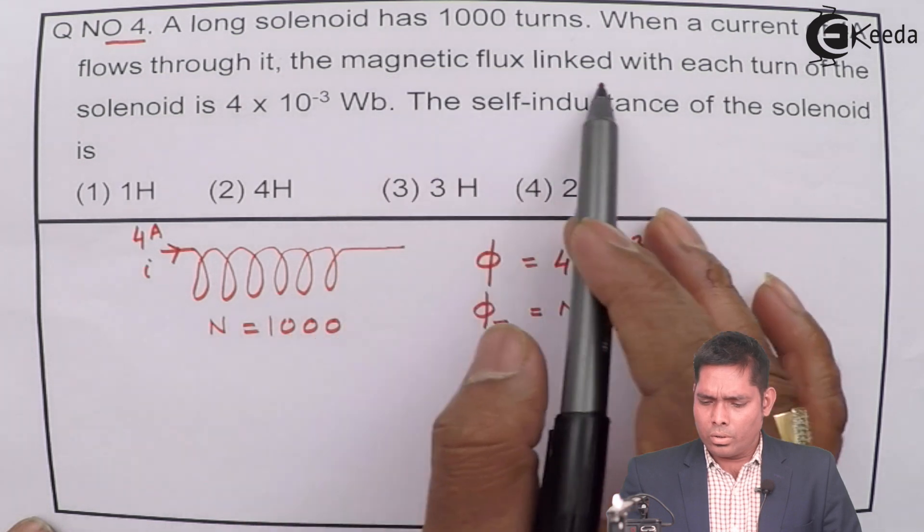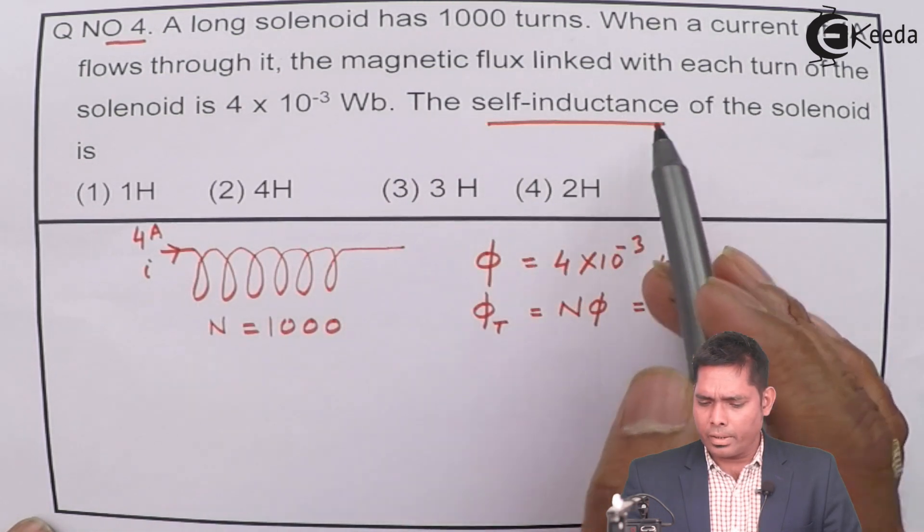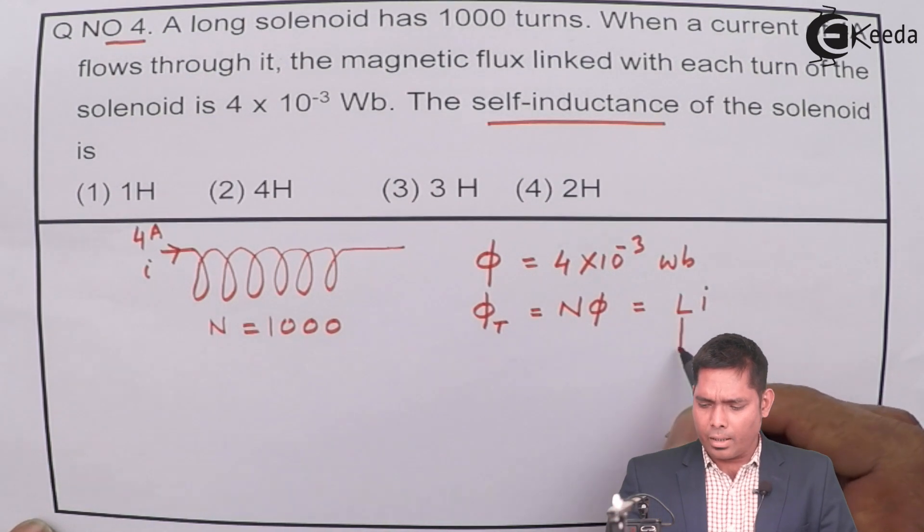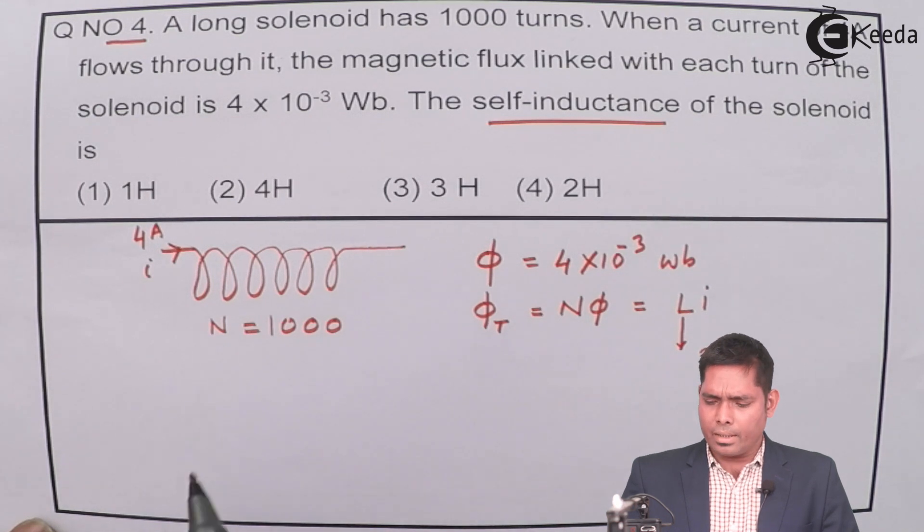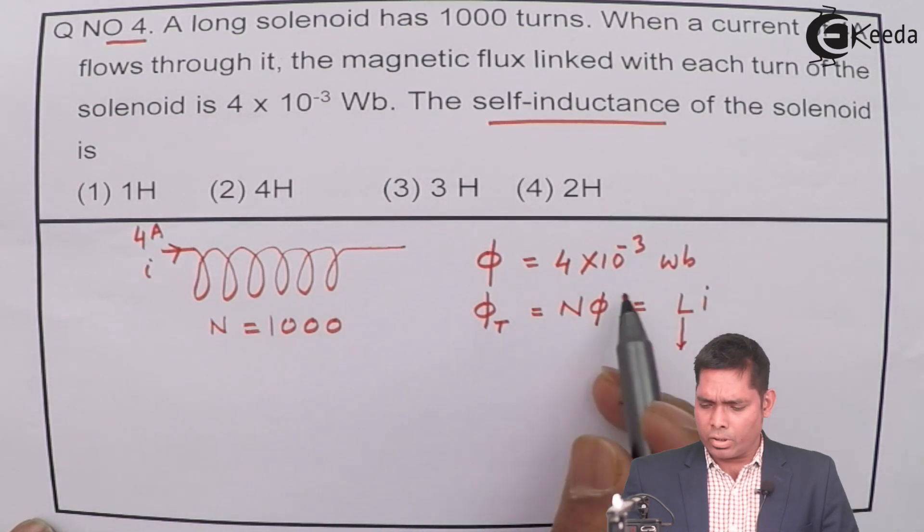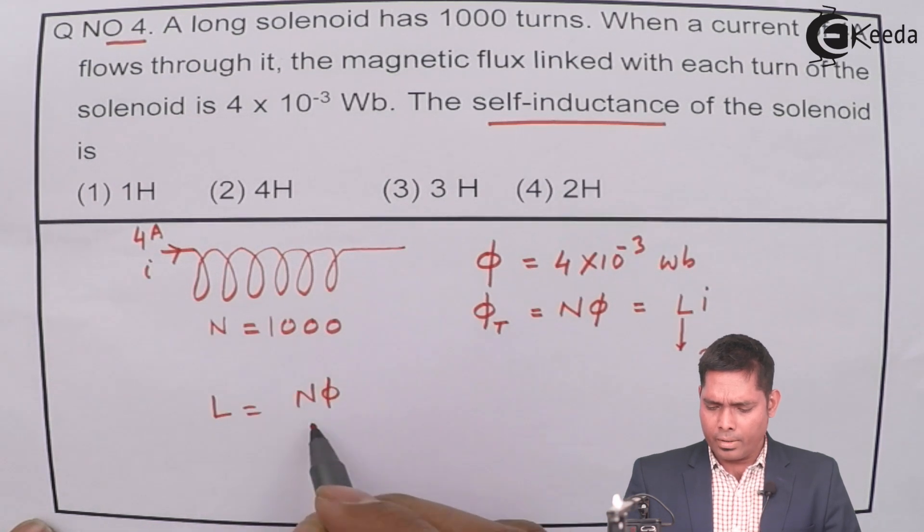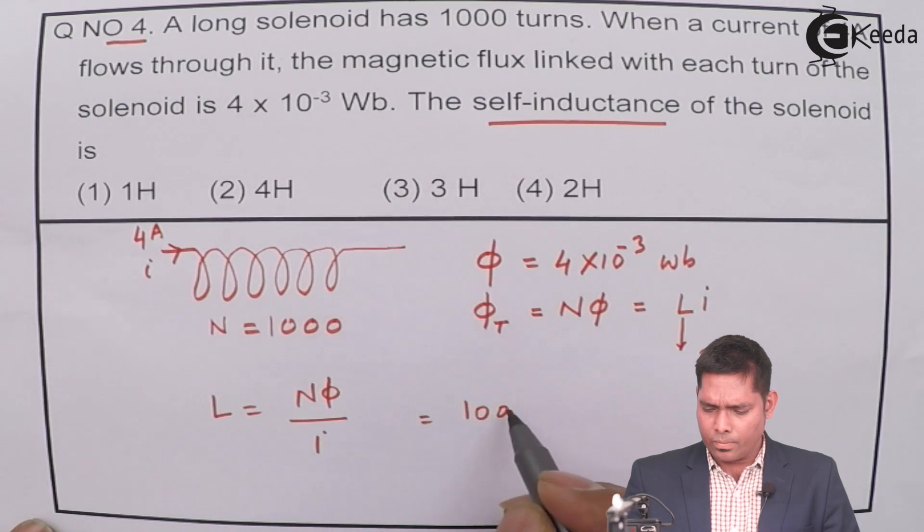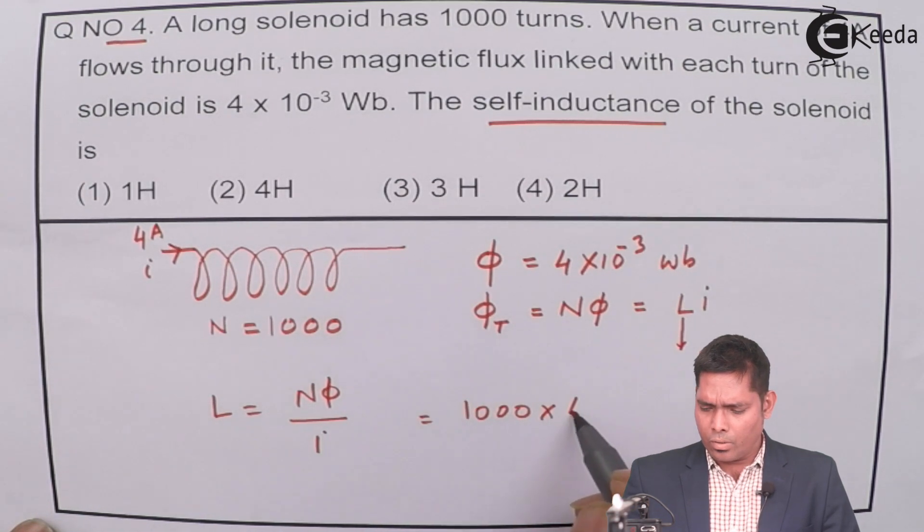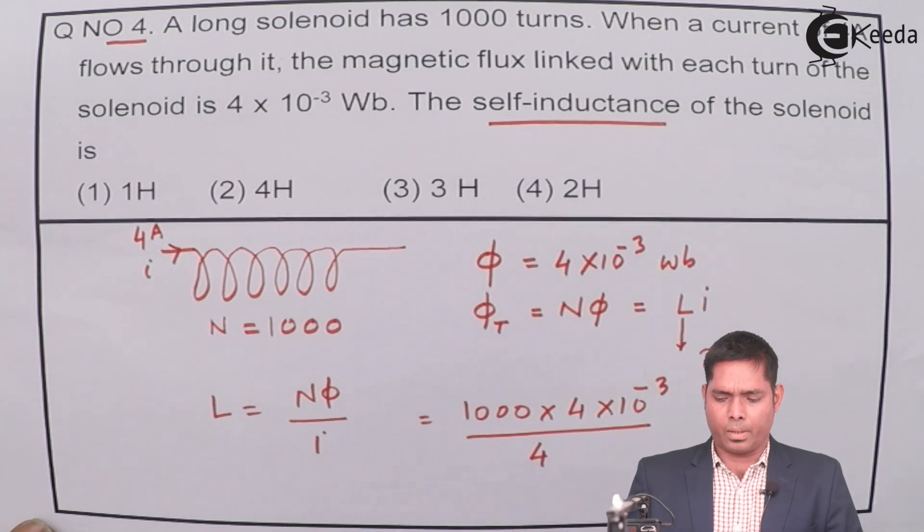The self-inductance of the solenoid, we need to find this L. We know that this equation can be used to find L, so L will be Nφ divided by I. N is 1000, φ is 4 × 10^-3 divided by I is 4 ampere.